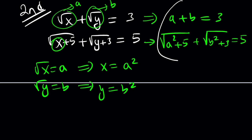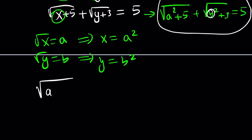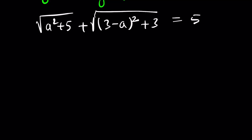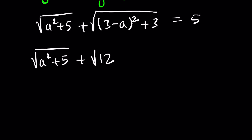This new system is much better. From the linear equation, b can be replaced with 3 minus a. Substituting into the second equation gives the square root of a² plus 5, plus the square root of (3−a)² plus 3, equals 5. Expanding (3−a)²: we get 9 minus 6a plus a², so inside the second radical we have a² minus 6a plus 12.